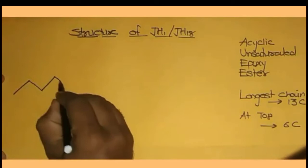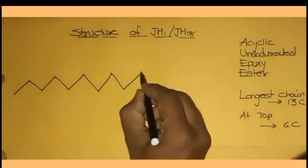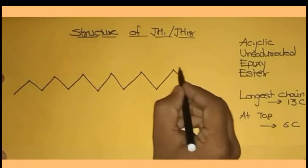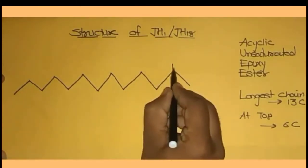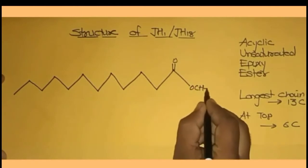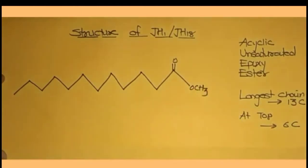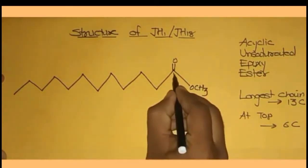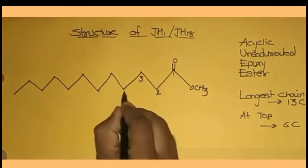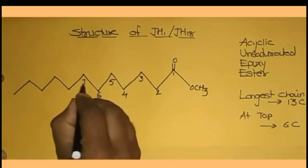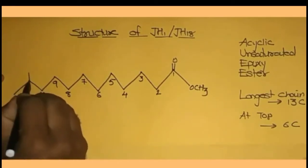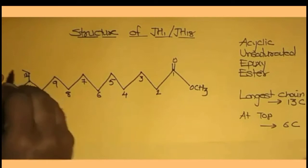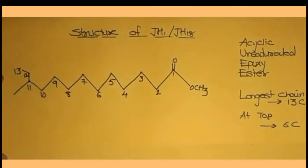We draw 6 carbon atoms at the top: 1, 2, 3, 4, 5, 6. With a double bond, O, and OCH3 — this is the methyl ester group. Ester ends with O-A-T-E. Now we number the main chain: 1, 2, 3, 4, 5, 6, 7, 8, 9, 10, 11, 12, and 13. So the main chain overall contains 13 carbon atoms.